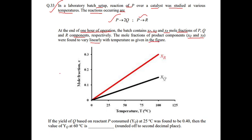Refer the figure: y-axis is mole fraction x, x-axis is temperature T in degree Celsius. Here xR and xQ are mole fractions of product components. The yield of Q based on reactant P consumed at 25°C was found to be 0.40. The objective of this question is to determine the yield of Q at 60°C, and we have to round off the result to the second decimal place.